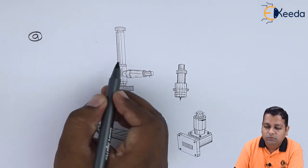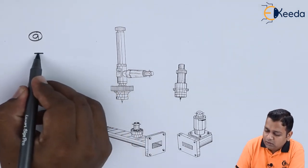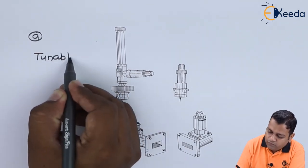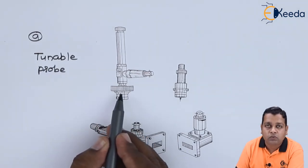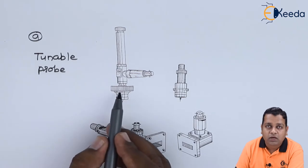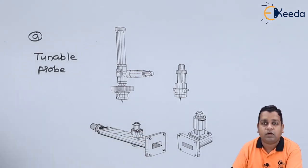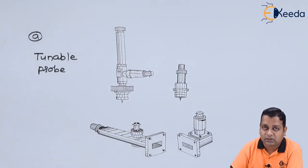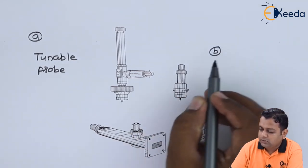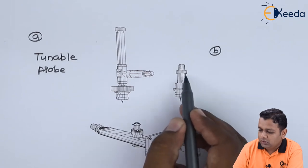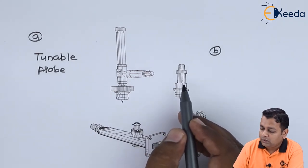So you can see this particular component, this we can regard as small part A of the figure, and this is nothing but the tunable probe. This tunable probe base is mounted onto the slotted line.